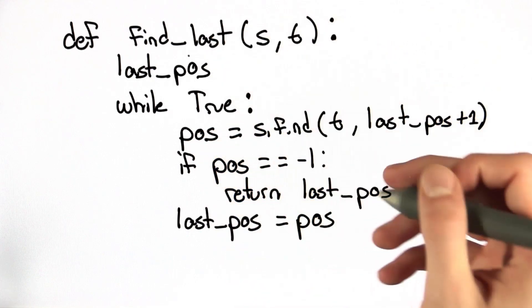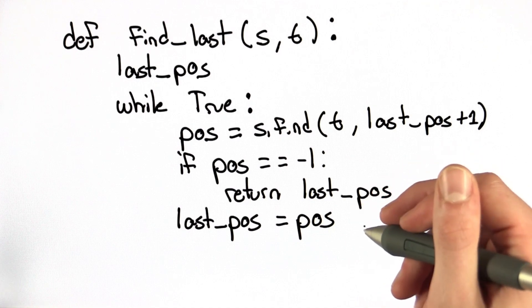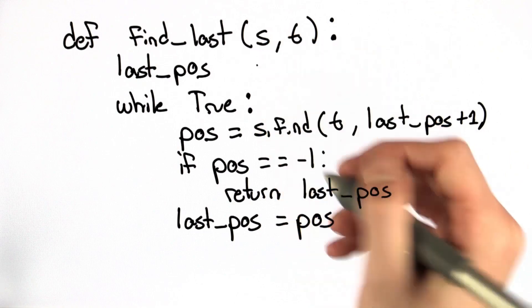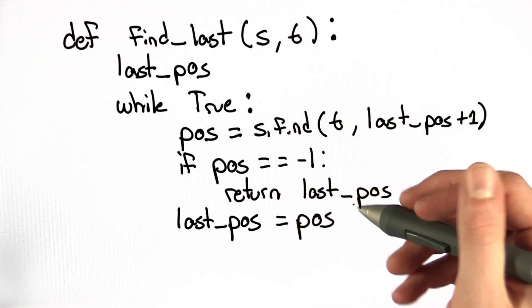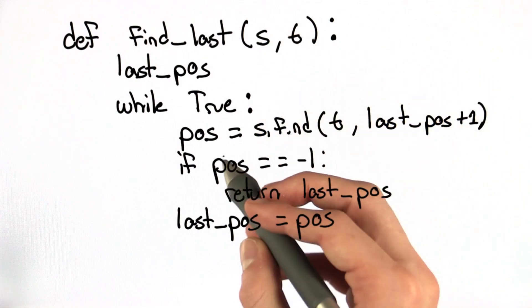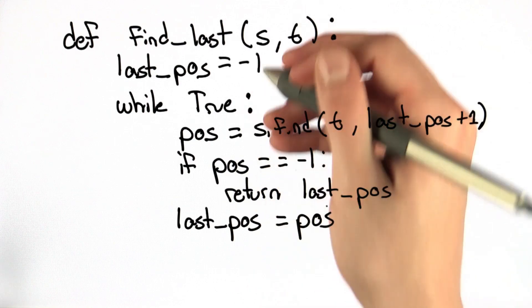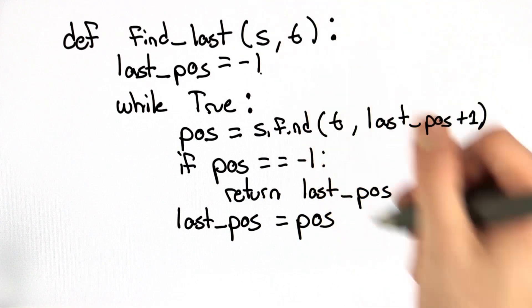So the one thing left is what do we initialize last_pos to? If we never find any occurrence of t in s, the goal is to return negative 1. So if position equals negative 1 in the first iteration, we're just going to return last_pos. So it makes sense to initialize it to negative 1.